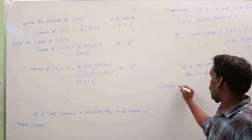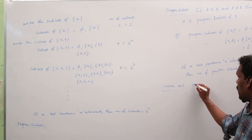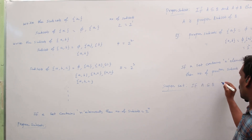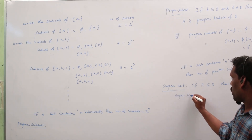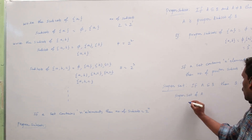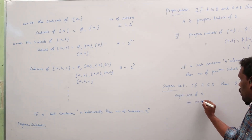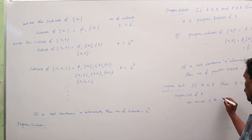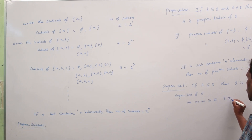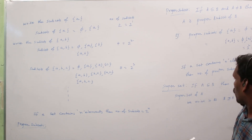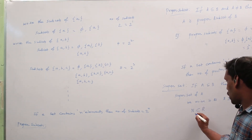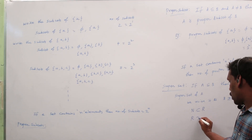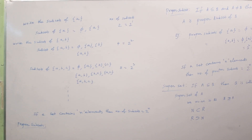Next, superset. If A is a subset of B, then B is called the superset of A, written as B ⊇ A. For example, since natural numbers are a subset of real numbers, R is the superset of natural numbers.